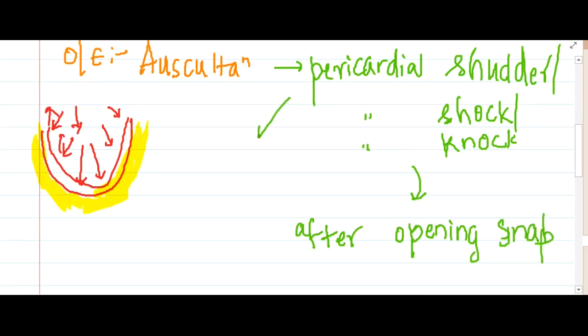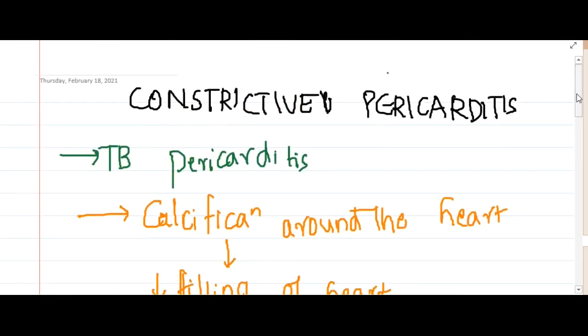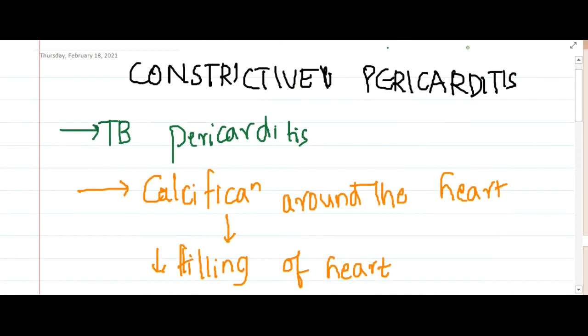If you remember, the pericardial rub which is present is a low-pitched sound, but this pericardial shudder is a high-pitched sound which is heard with the diaphragm of the stethoscope. This is about tubercular pericarditis and its complication constrictive pericarditis. Thank you for watching.